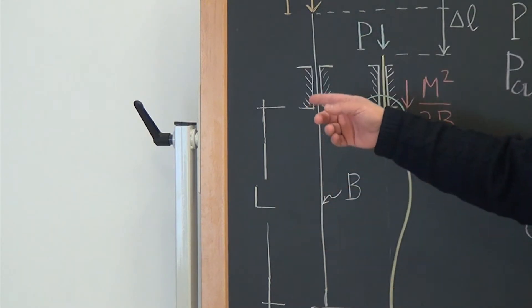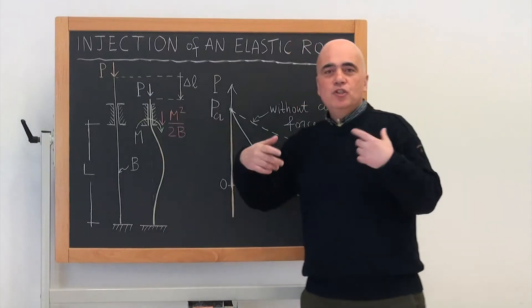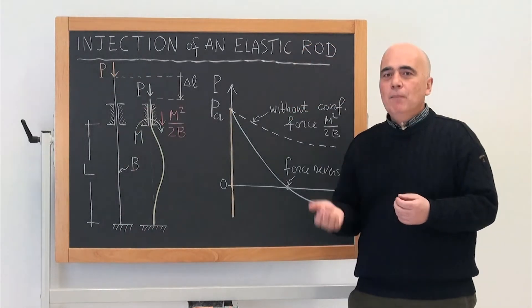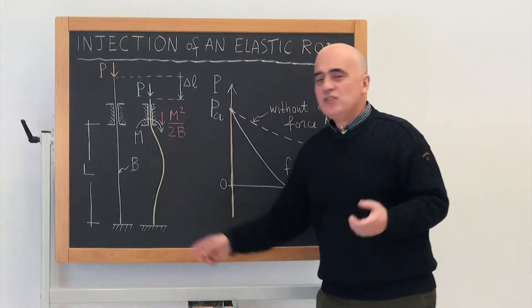The rod is loaded with an axial force P which is increasing, so that initially the system remains straight and then a buckling load is reached and bending starts.